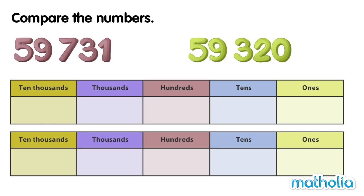Let's compare the numbers 59,731 and 59,320. Let's start by writing the numbers in a place value chart.